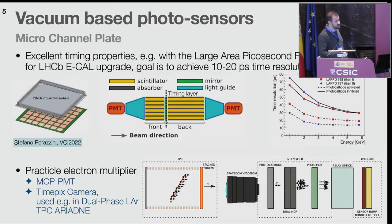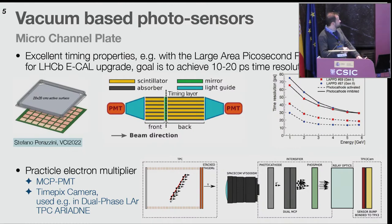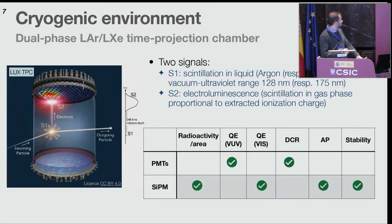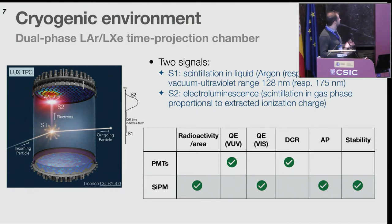For MCP-PMTs like the 20-inch PMT, and also using the TimePix camera — probably known to you — which is used in the ARIADNE TPC. Coming to TPCs brings me to the use of silicon PM in cryogenic environments. This was also shown yesterday: dual-phase liquid argon or liquid xenon time projection chambers, where you detect luminescence, electroluminescence, and scintillation signals.